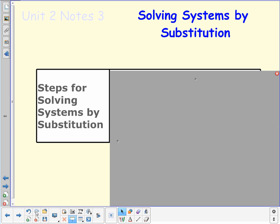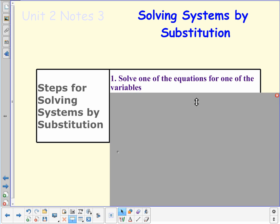Here are our steps for solving using substitution. The first thing that we want to do is solve one of the equations for one of the variables. So, we need to look for a variable alone. Get a variable alone.